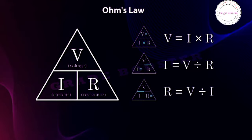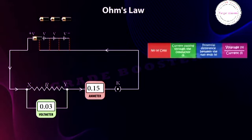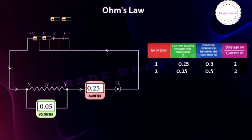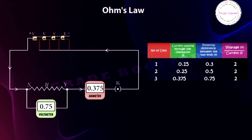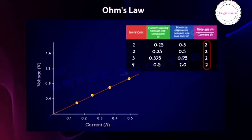To verify Ohm's law, we need a few cells, a cell holder, a conductor, an ammeter to measure electric current, and a voltmeter to measure the potential difference. Connect the circuit and place only one cell in the cell holder. Note down the readings on the voltmeter and ammeter and write these values in a table. Add one more cell to the battery and note down the readings. Take readings with three cells and then with four cells. Plot these values on a graph with current flow on the X axis and potential difference on the Y axis.